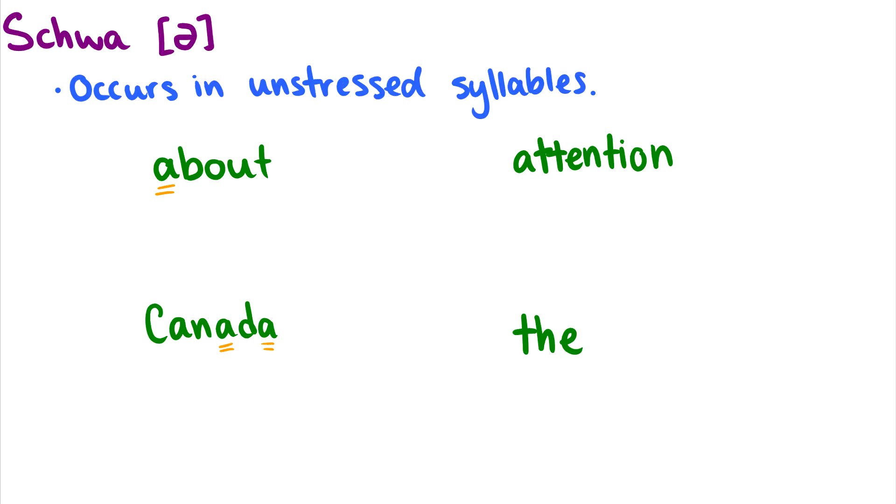Attention. You have the schwa at the beginning in attention. Some people would also transcribe a schwa in the last syllable. You can kind of hear this very slightly reduced schwa. So you might see either a schwa n at the end, or some people do what's called a syllabic n.